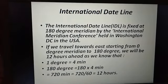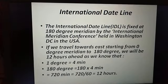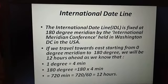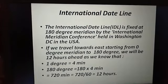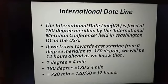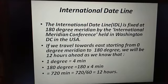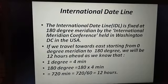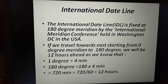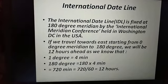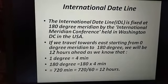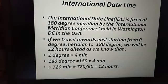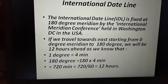This was decided through a conference held in USA, in Washington DC, where it was decided that the international date line would be at the 180 degree meridian. If we travel towards east starting from 0 degrees meridian to 180 degrees, we will be 12 hours ahead, as we know that 1 degree equals 4 minutes.